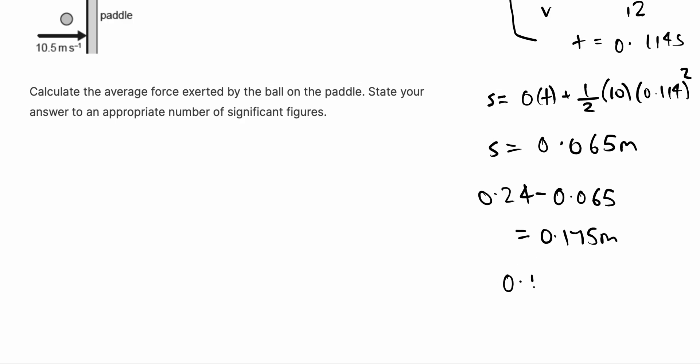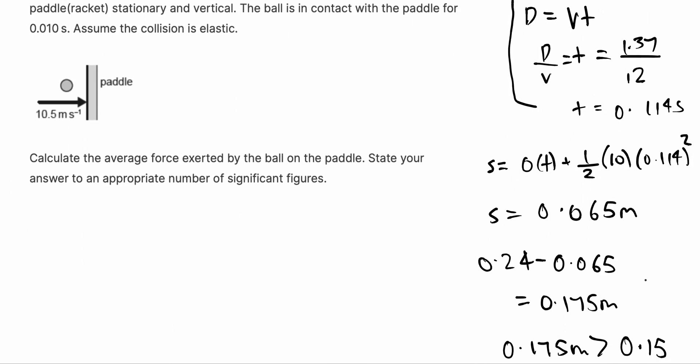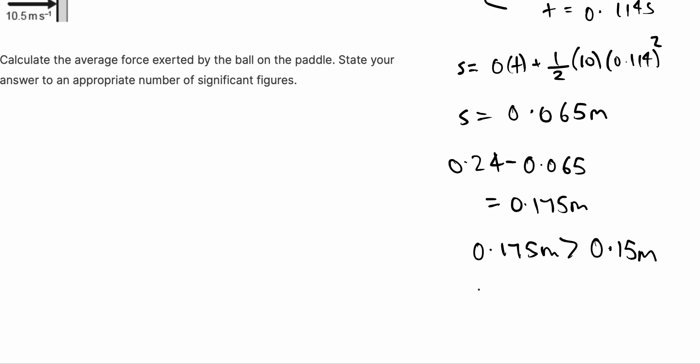0.175 meters is greater than 0.15 meters, and so the ball passes over the net.